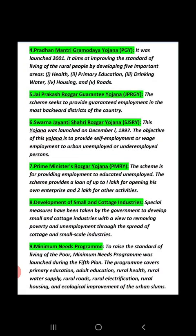Next was Pradhan Mantri Gram Uday Yojana. Gram Uday is made of two words — Gram plus Uday — meaning the shining of the villages. This Yojana was launched in 2001 and the main objective was to improve the standard of living of rural people in areas of health, primary education, drinking water, housing, and roads.